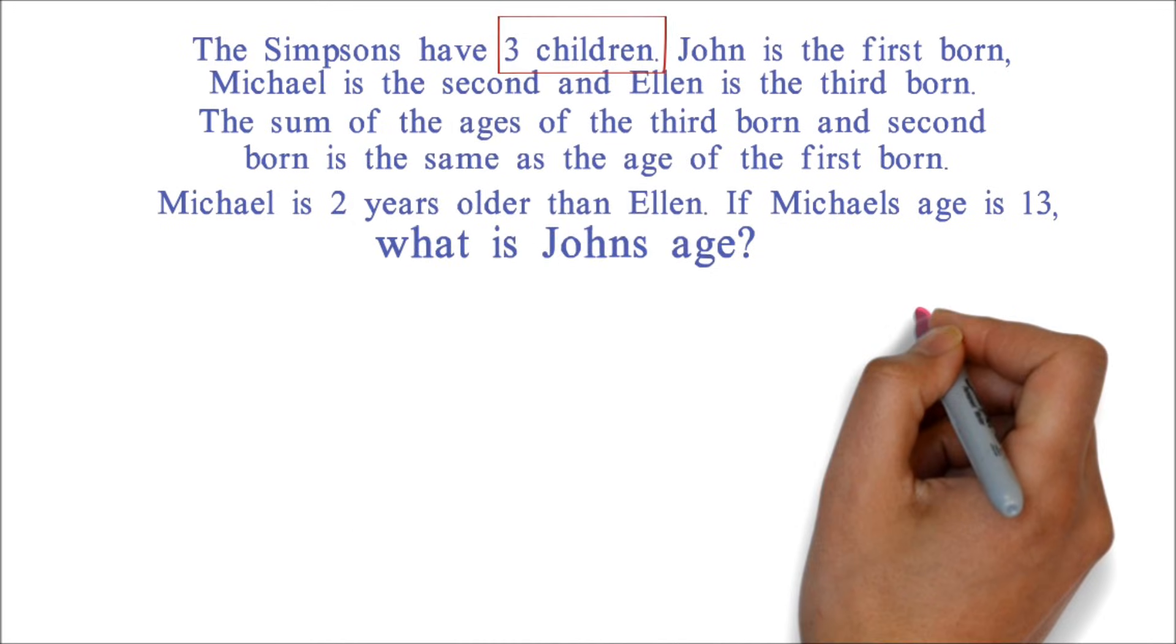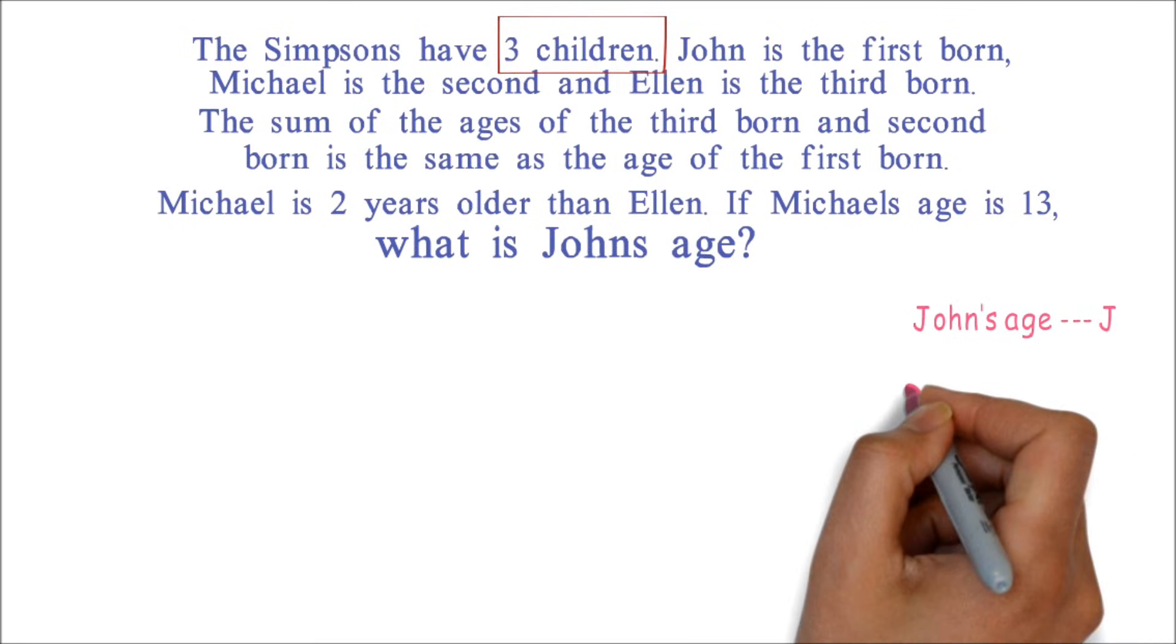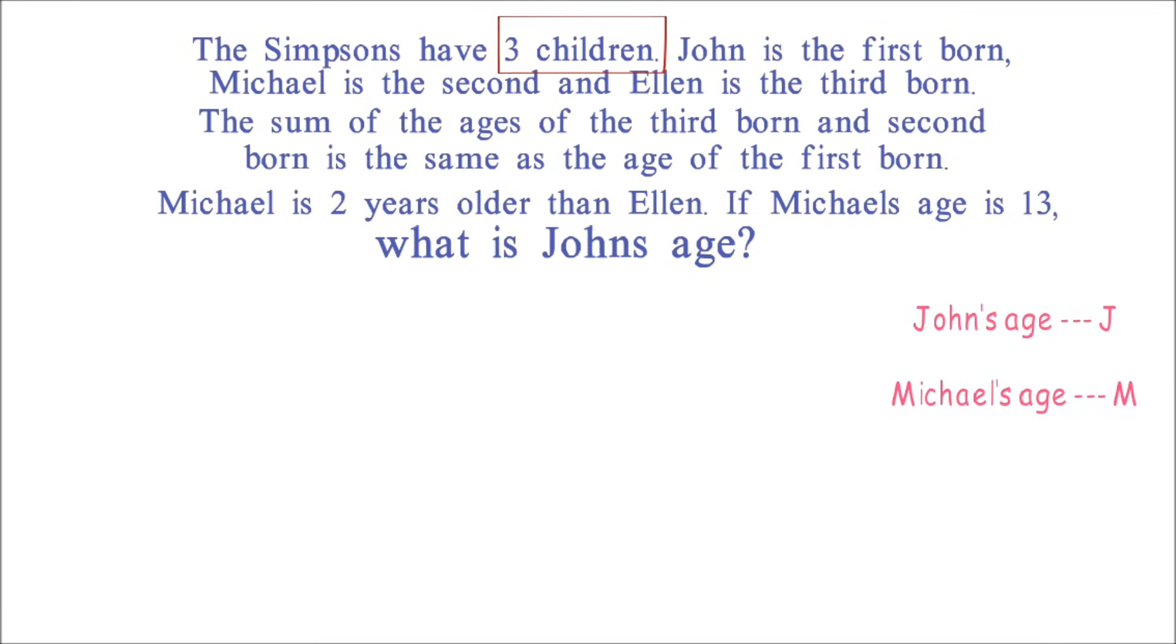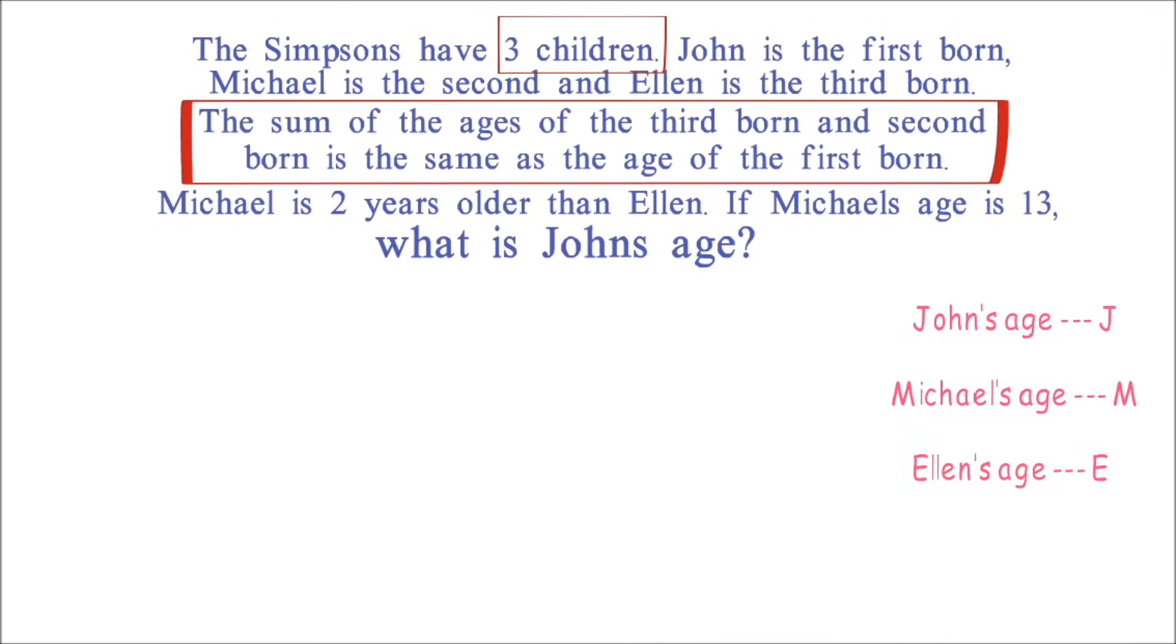The next set of information we know is John, who we represent by J, is the firstborn. Michael, who we represent by M, is the secondborn. And Ellen, who we represent by E, is the thirdborn. The next information is the sum of the ages of the thirdborn and secondborn is the same as the firstborn. We know sum means addition. We also know the thirdborn is Ellen, and the secondborn is Michael.